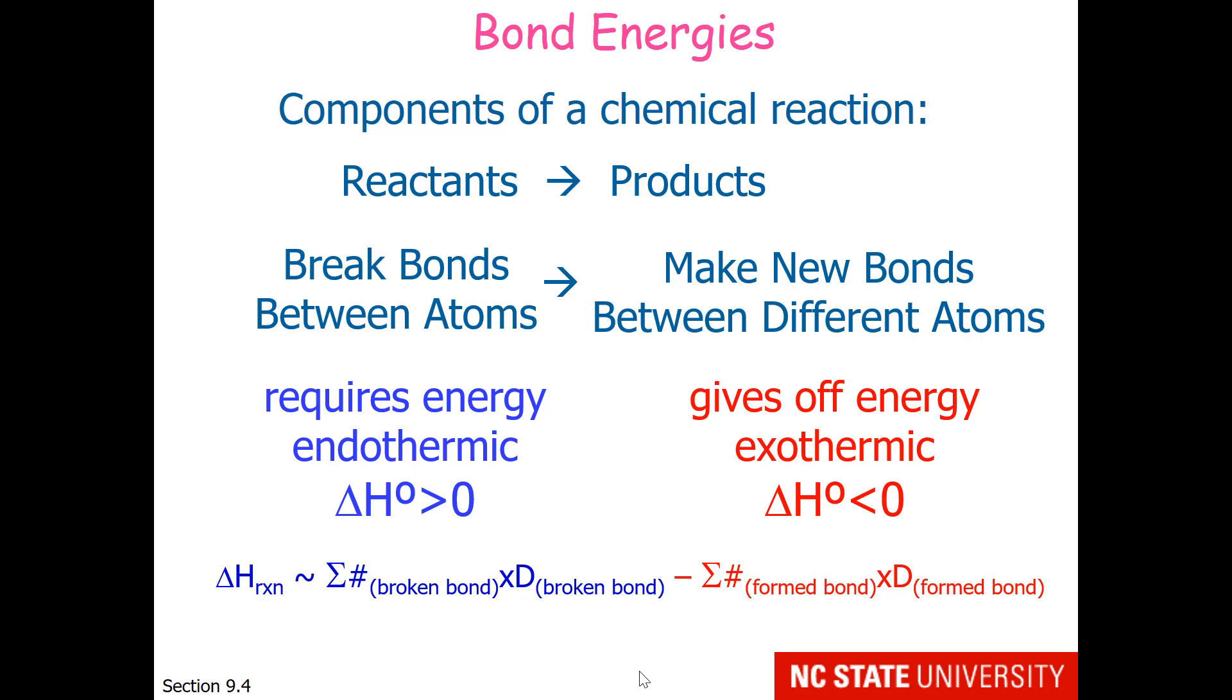The general formula we're going to use is delta H of reaction is approximately equal to the number of broken bonds times that bond energy, minus the number of formed bonds times that bond energy.